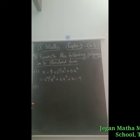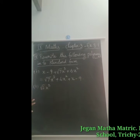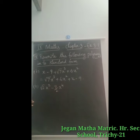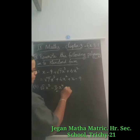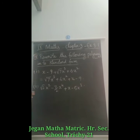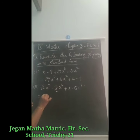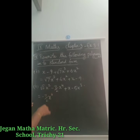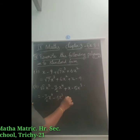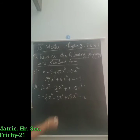Second question: root 2 x squared minus 7 by 2 x power 4 plus x minus 5x cubed. Arranging in descending order of powers: minus 7 by 2 x power 4, then minus 5x cubed, then plus root 2 x squared, then plus x. There is no constant term, so no need to write one.